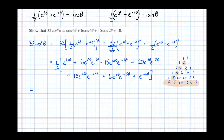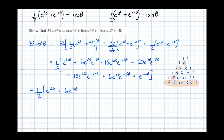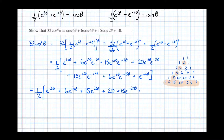Simplifying by adding the exponent powers together, that line equals ½(e^(6iθ) + 6·e^(4iθ) + 15·e^(2iθ) + 20 + 15·e^(−2iθ) + 6·e^(−4iθ) + e^(−6iθ)), since e^(i·0·θ) = 1 gives us the constant term of 20.